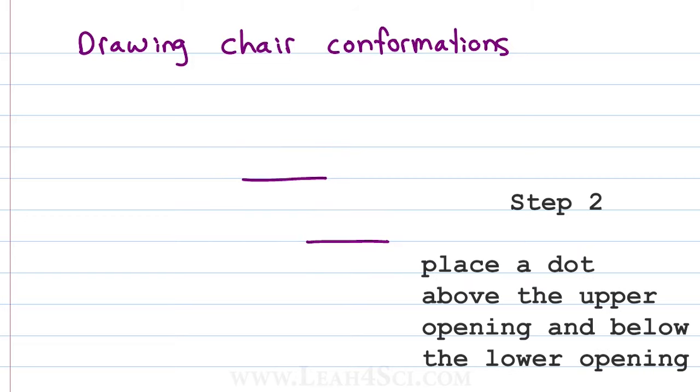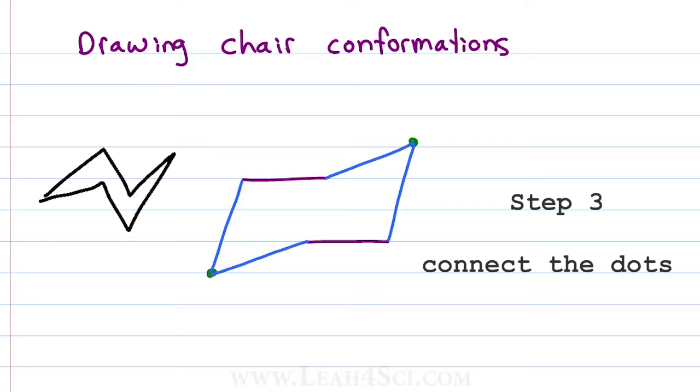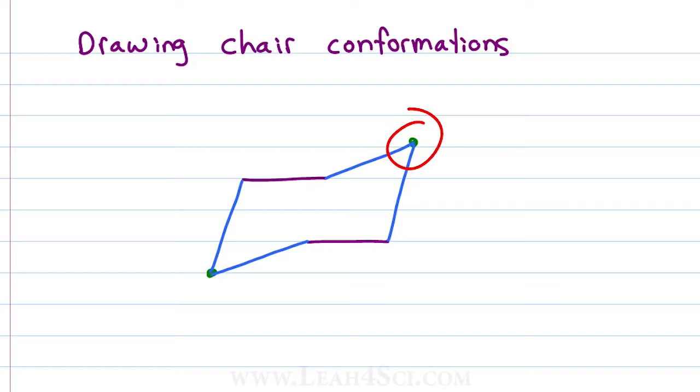Then we're going to place two dots towards the opening, the dot over the upper opening is going to go slightly above, the dot below the lower opening will be slightly below and then once again we connect the dots. As you can see, it doesn't look very much like the chairs in your book but it's very obvious. I see which is the carbon facing up, which is the carbon facing down and I can tell exactly where the other carbons are located.